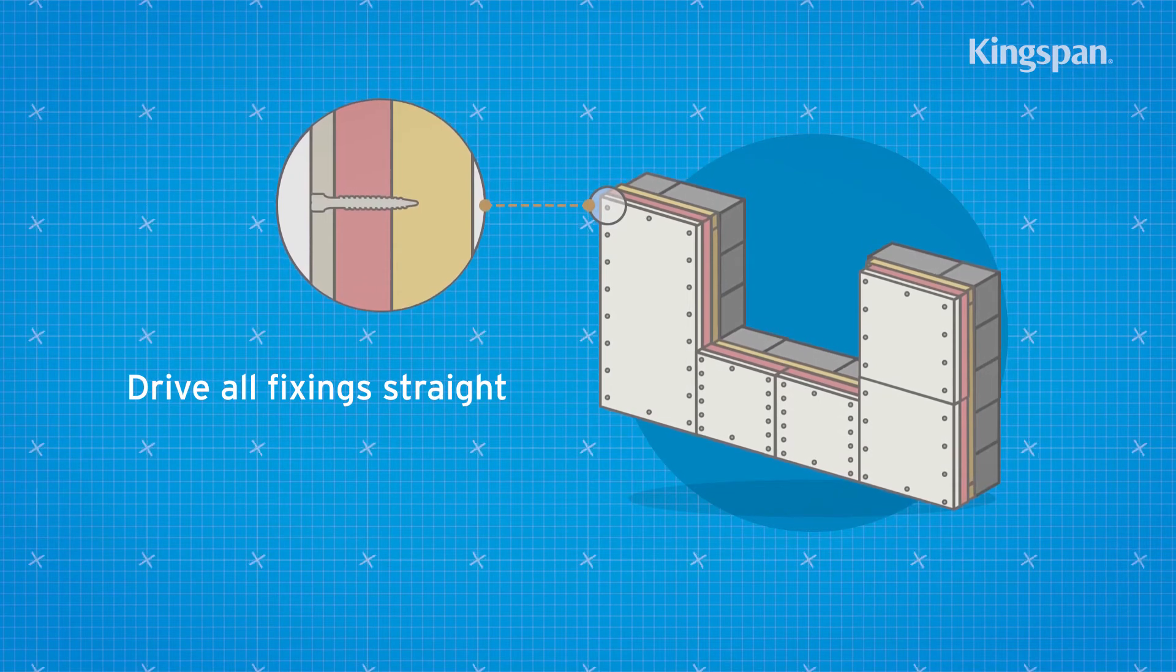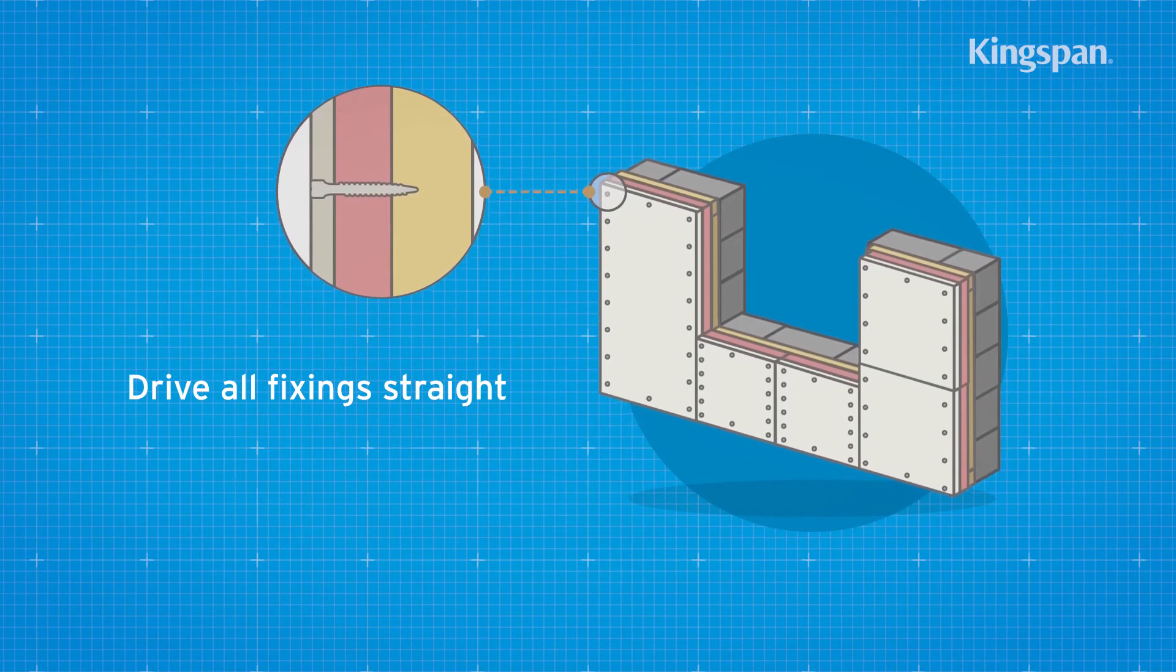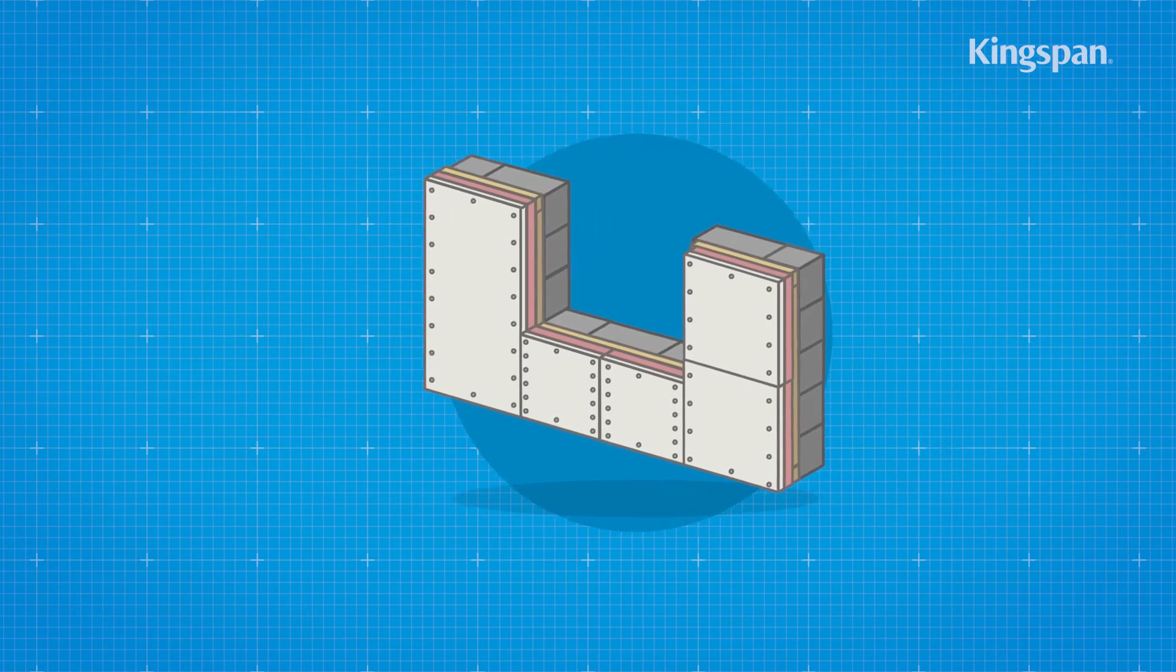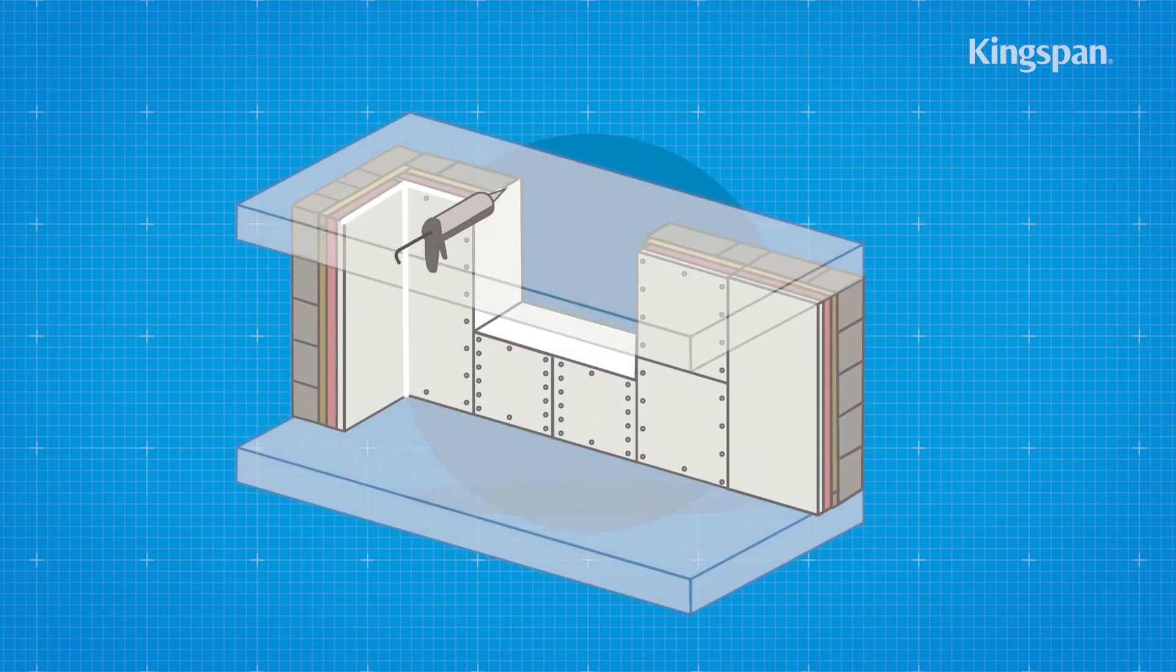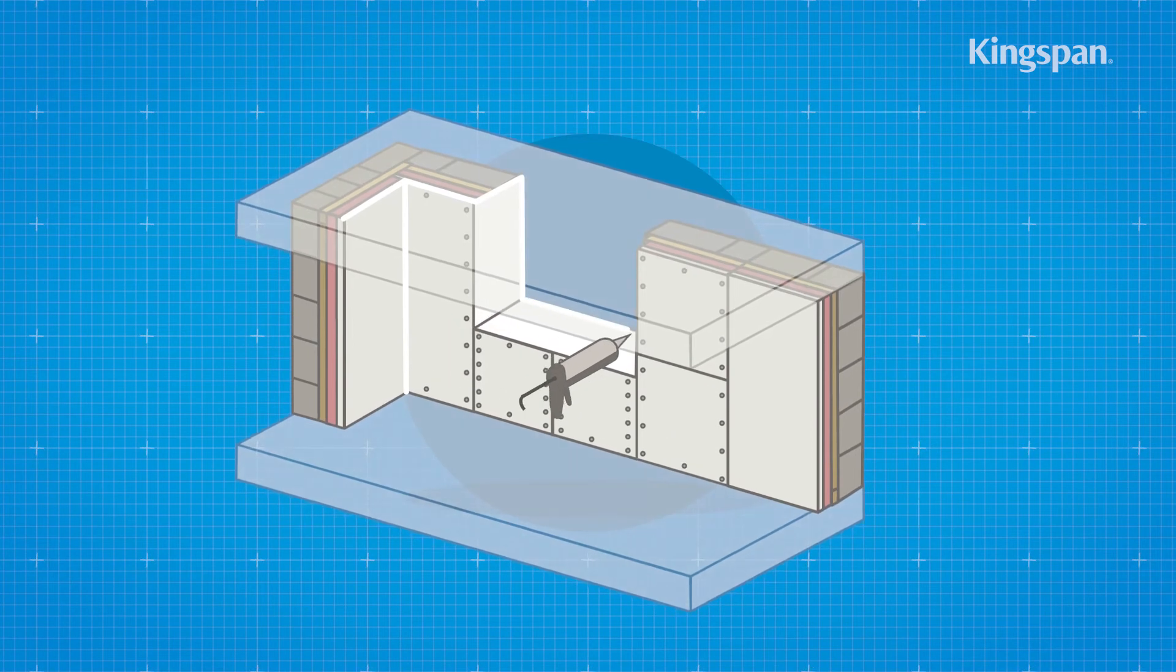Drive all fixings straight with heads embedded just below the surface of the plasterboard. To finish, seal the perimeter of the insulated plasterboard with a flexible sealant or equivalent.